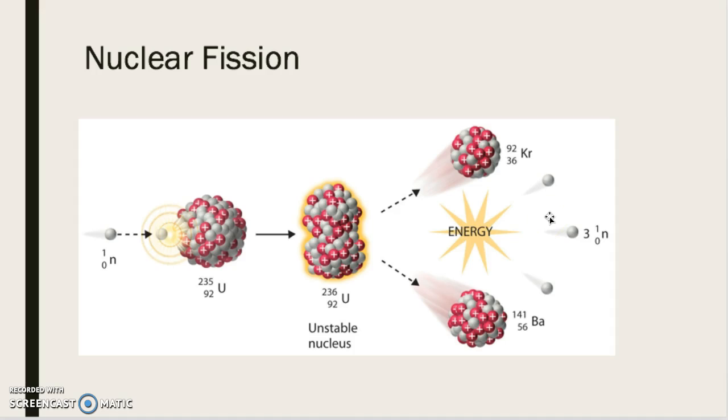These neutrons, moving at high speeds, hit other uranium-235 isotope atoms and this chain reaction begins that creates and continues to create lots of energy. The chain reaction will go on for a long period of time, if not stopped.